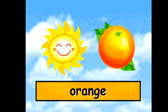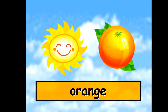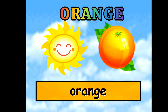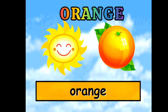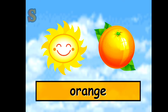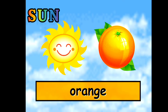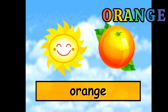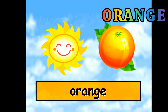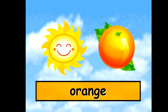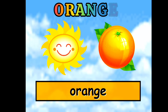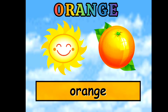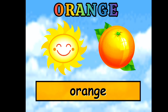Next is, orange color. So what you can see in orange color? Orange sun and orange. O-R-A-N-G-E. Orange color.